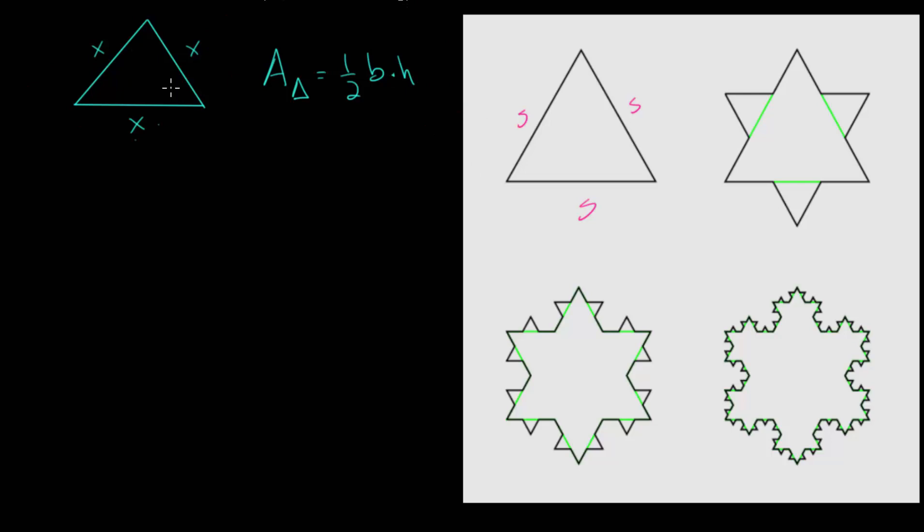So if we can figure out the height of this equilateral triangle we can just plug that into the formula where the base is X. This height can be found if we drop a vertical line that is perpendicular to the base.